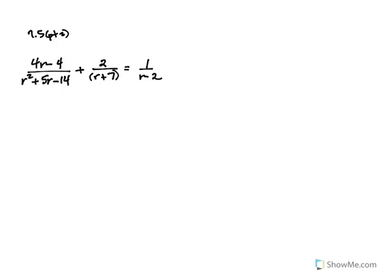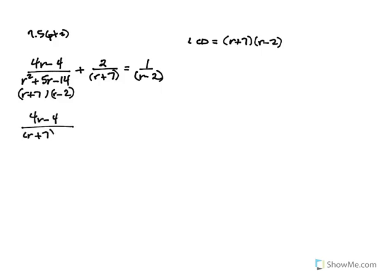I see an R plus 7 and an R minus 2, but then I also see this trinomial. So you're going to have to factor it so that we can identify the LCD for this particular problem. The LCD is R plus 7 and R minus 2. Most problems will have the LCD factors present in the other denominators. So I like to rewrite the problem with the factored denominators.